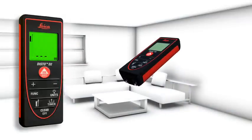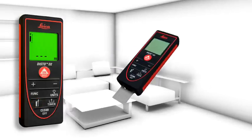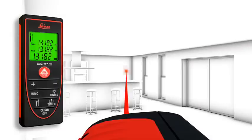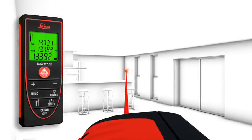The flip out end piece makes measurements from edges or corners easy, for example to define the diagonal of a room. The maximum measurement function is useful to define the longest distance.